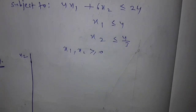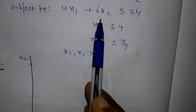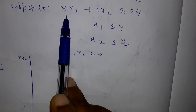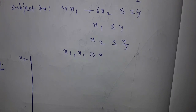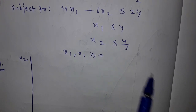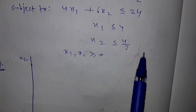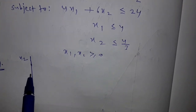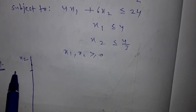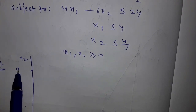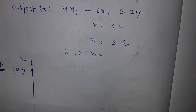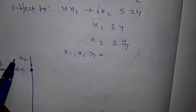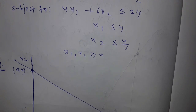Take the axes x1 and x2 with the origin, and draw the constraint lines as in previous examples. For the first constraint, when x2 is 0, x1 is 6, and when x1 is 0, x2 is 4. Plot these two points at (6, 0) and (0, 4) and join them to get the line.